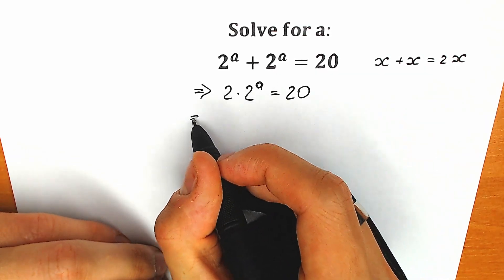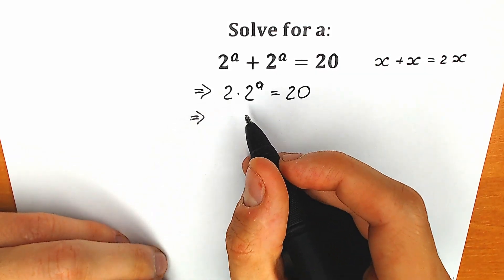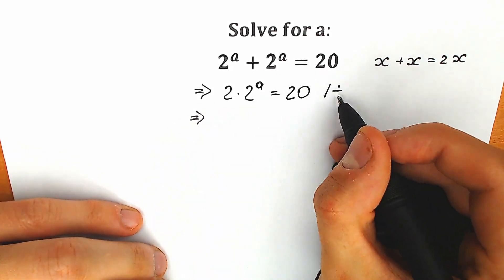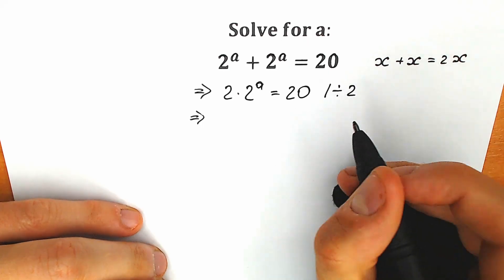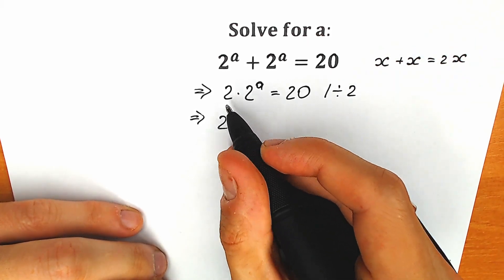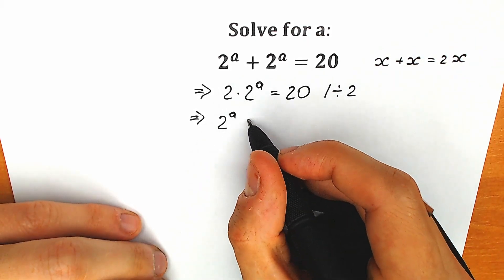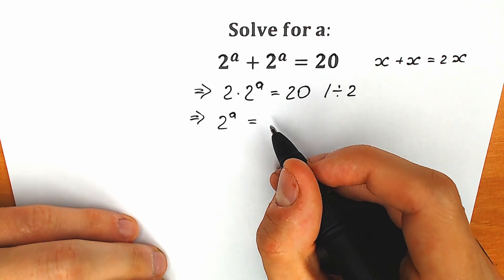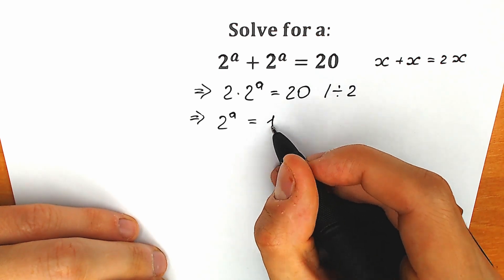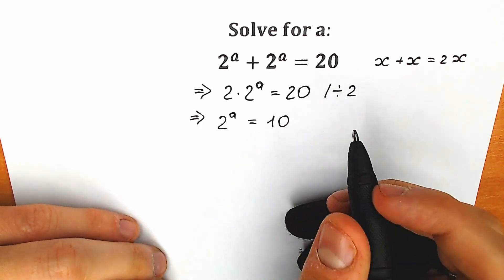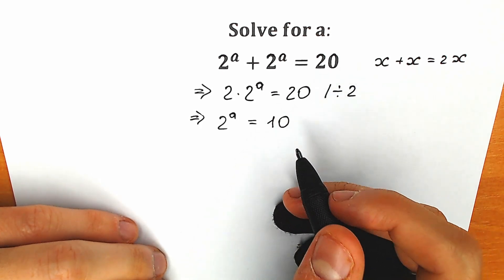Secondly, let's divide both sides by 2. As a result, when we divide both sides by 2, we can easily have 2 to the a. The 2 will cancel on the left side, and on the right side we have 20 over 2, so we have 10. So 2 to the power a equal to 10. Here is our equation.